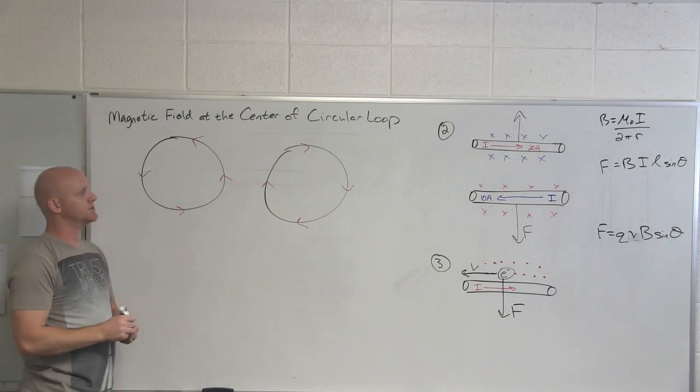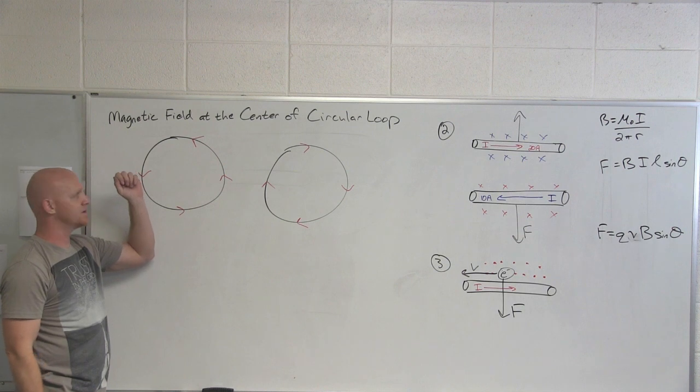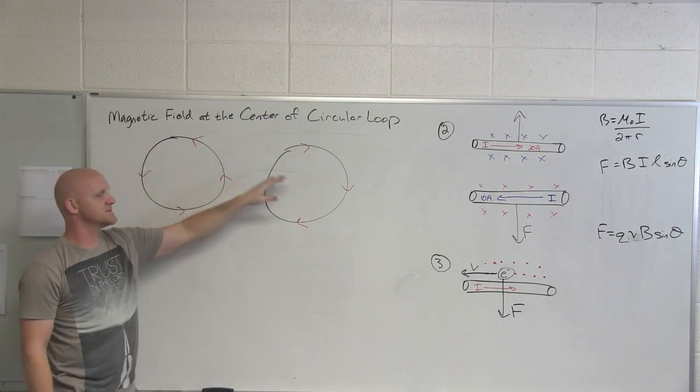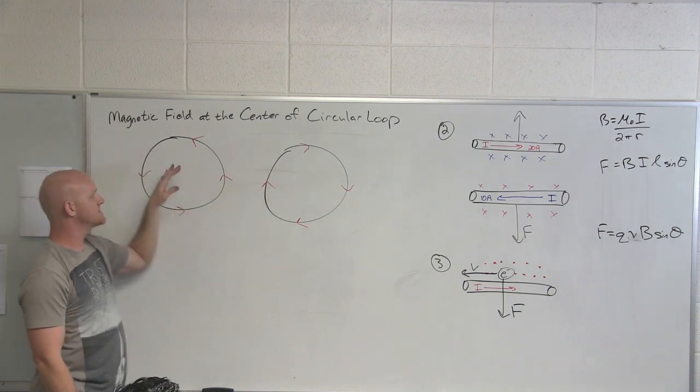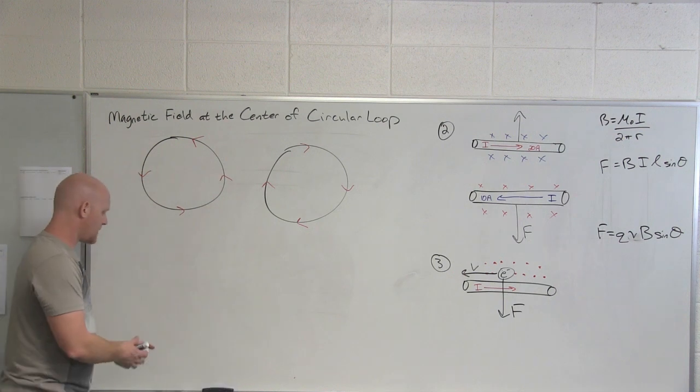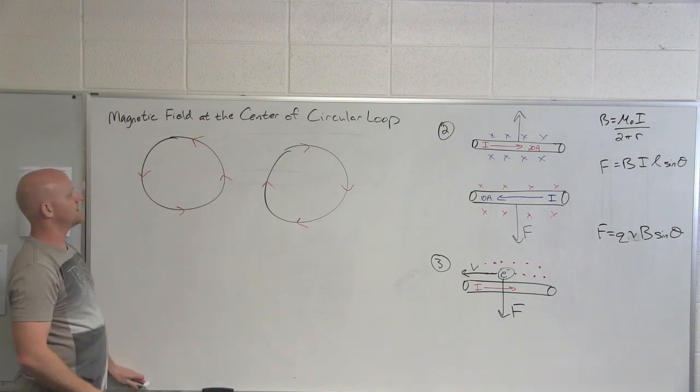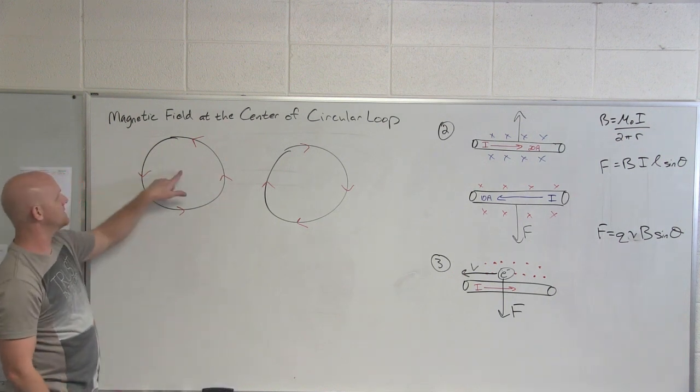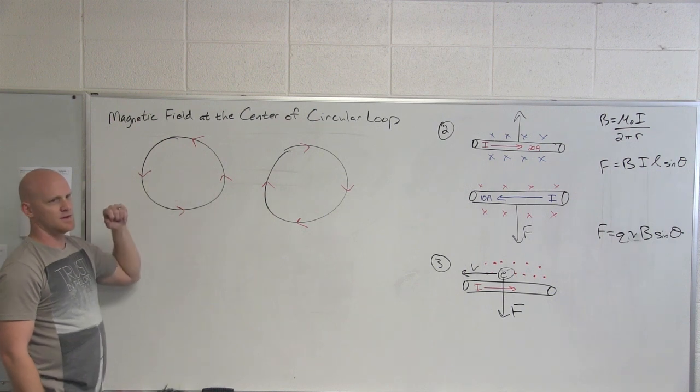Alright, so let's say we've got a circular loop that has a current going through it. We'll look at both instances here, counterclockwise and clockwise. In this case with the current going clockwise, I want to know where's the magnetic field point at the center of the loop. We're gonna do this the long way once here.